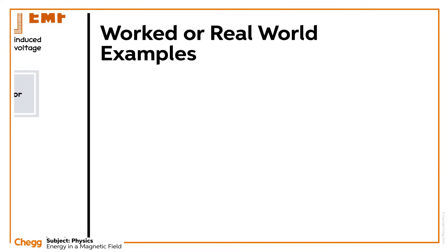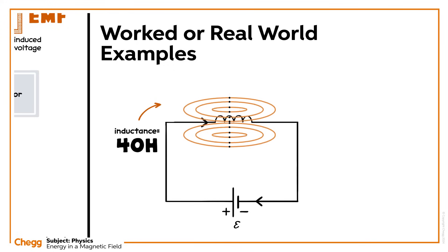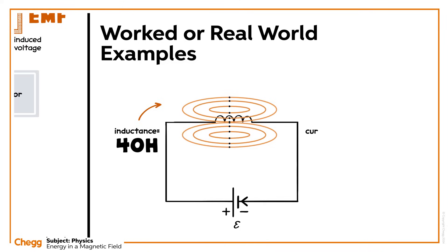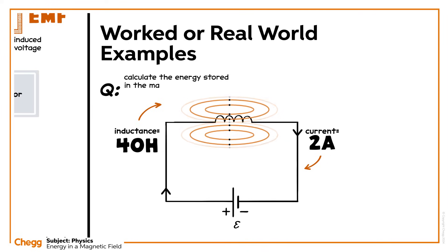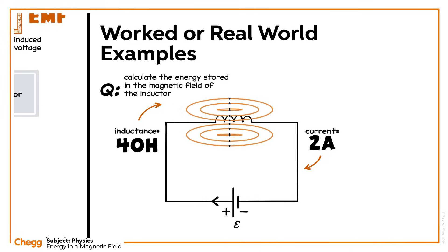Let's try a worked example. Consider an inductor of inductance of 40 H. The current flowing through the inductor is 2 amperes. Calculate the energy stored in the magnetic field of the inductor. Pause now if you want to try it on your own.